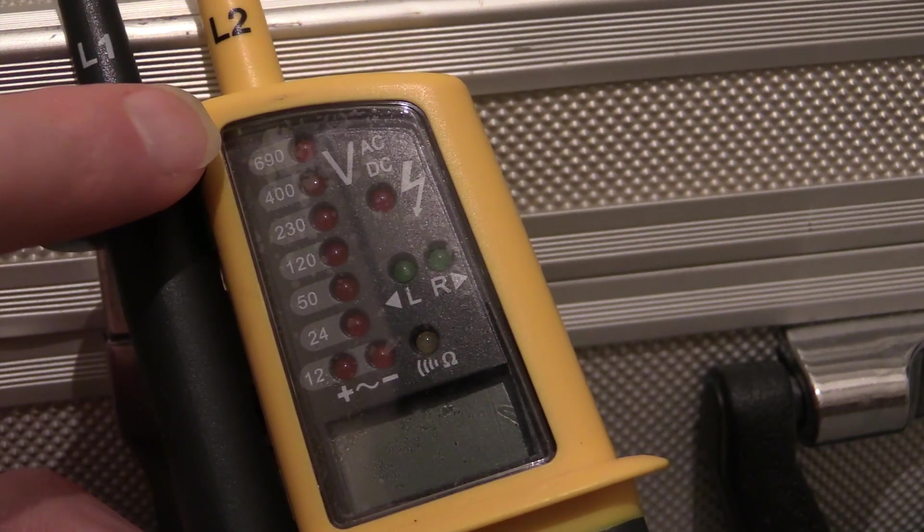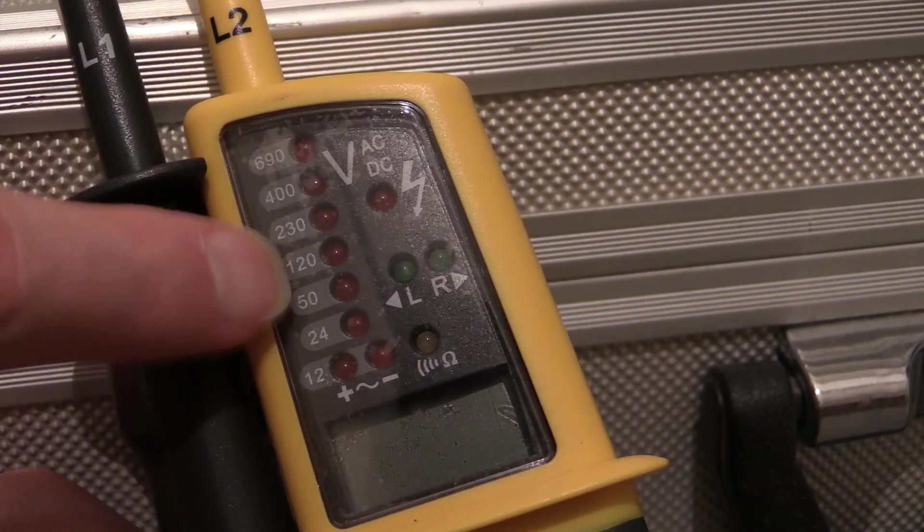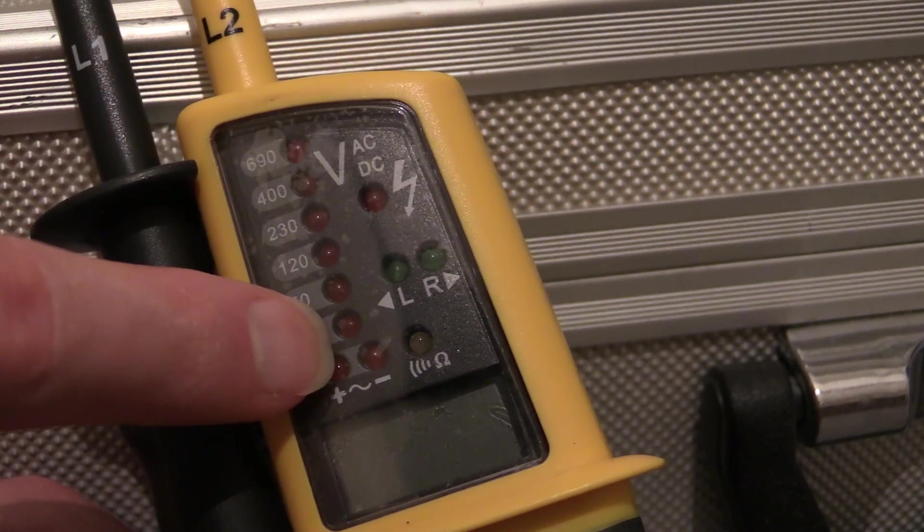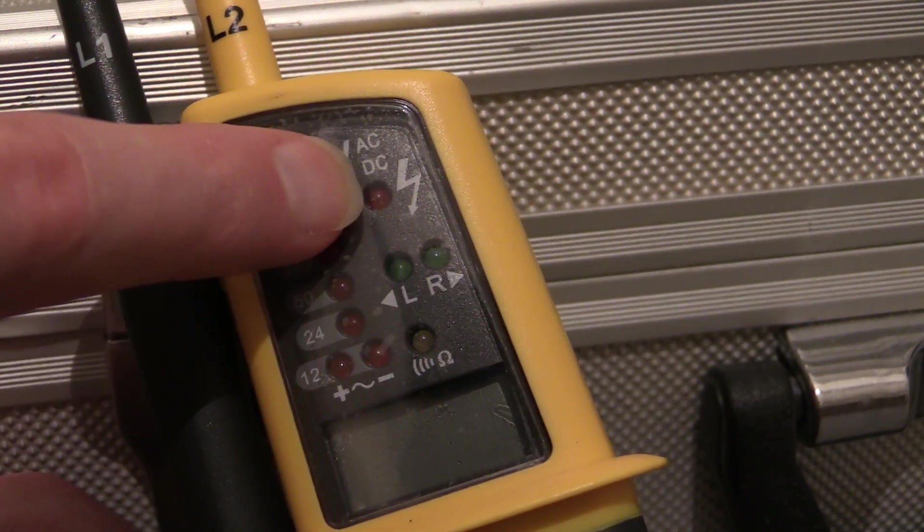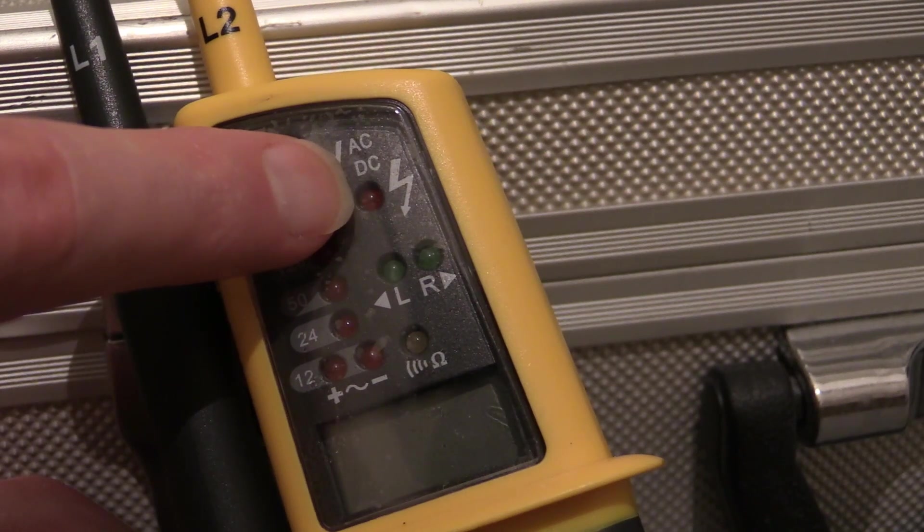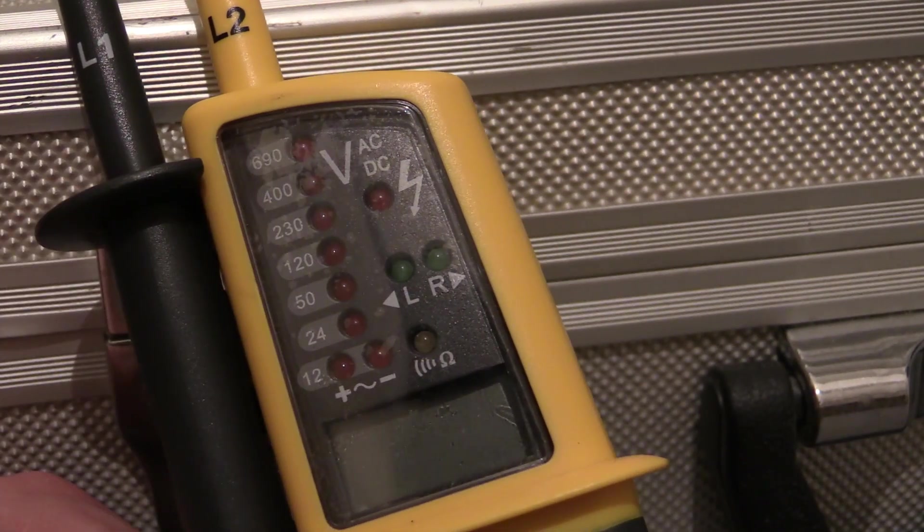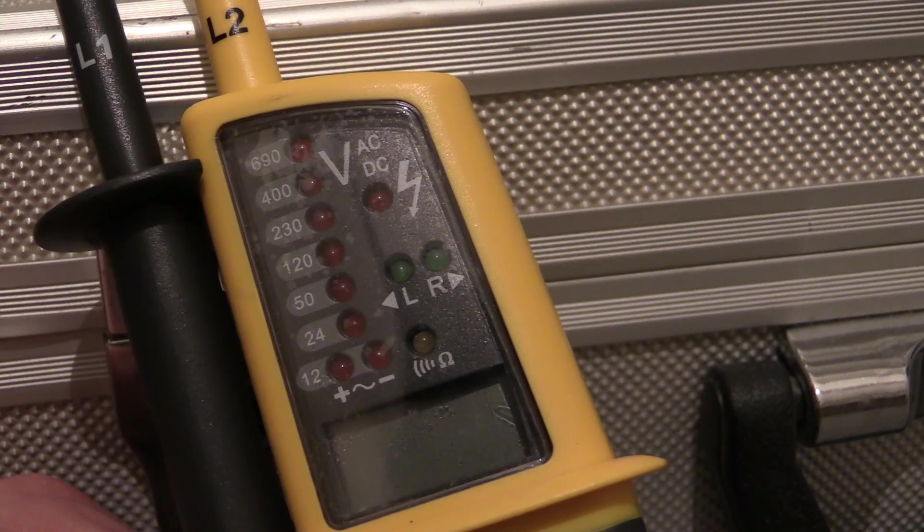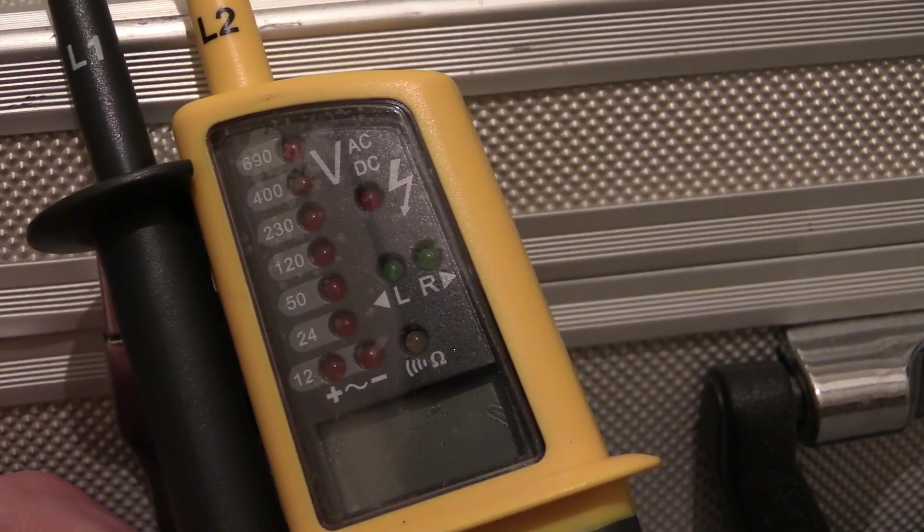Okay. And then, when it's detected up to a certain voltage and beyond, that red light lights up to say that, you know, there is a danger on the end of those test probes. Okay. There we go.